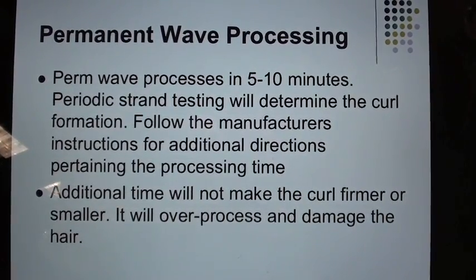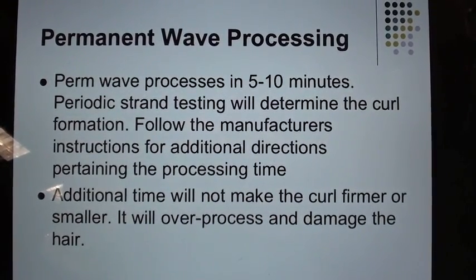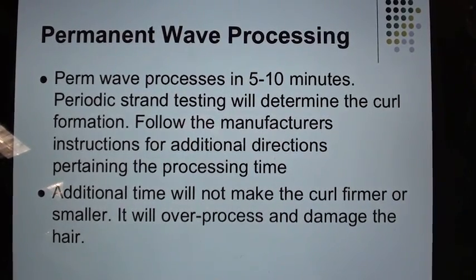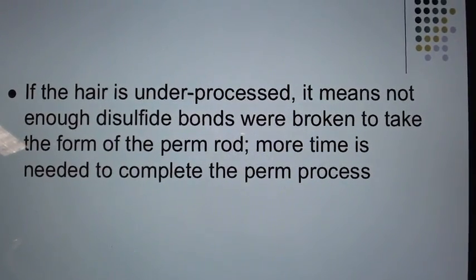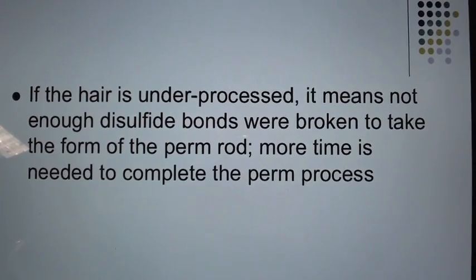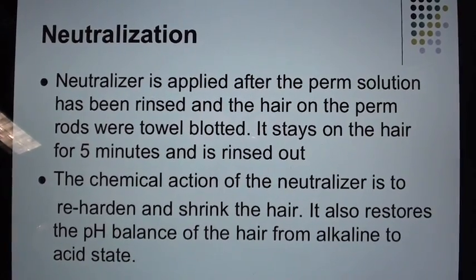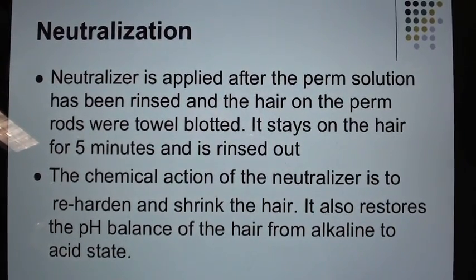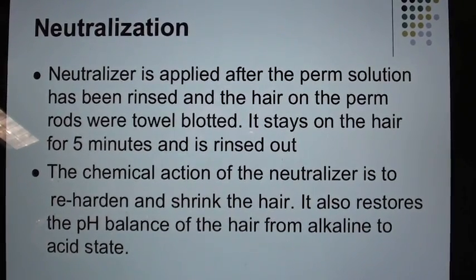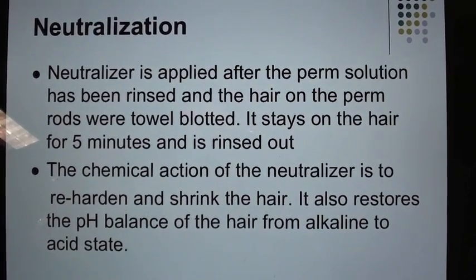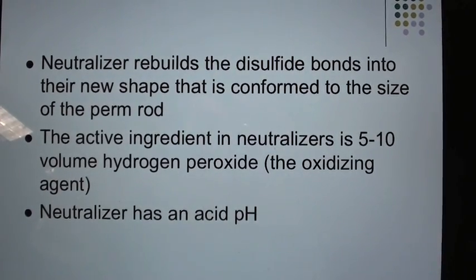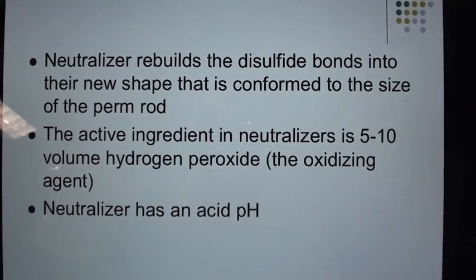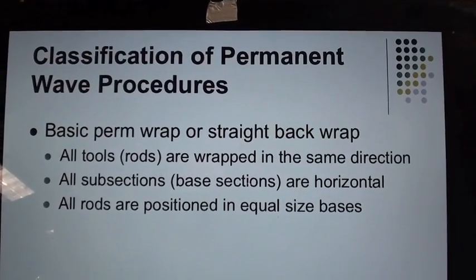Permanent wave processing: The perm processes in 5 to 10 minutes. Periodic strand testing determines curl formation. Follow manufacturer's instructions for processing time — additional time will not make the curl firmer or smaller; it will over-process and damage the hair. If the hair is under-processed, not enough disulfide bonds were broken; more time is needed. Neutralization: The neutralizer is applied after the perm solution has been rinsed and hair on rods is towel-blotted. It stays on 5 minutes, then is rinsed. The neutralizer re-hardens and shrinks the hair, restores the pH balance from alkaline to acid, and rebuilds the disulfide bonds into their new shape conformed to the perm rod. The active ingredient is 5–10 volume hydrogen peroxide (the oxidizing agent), and the neutralizer has an acid pH.